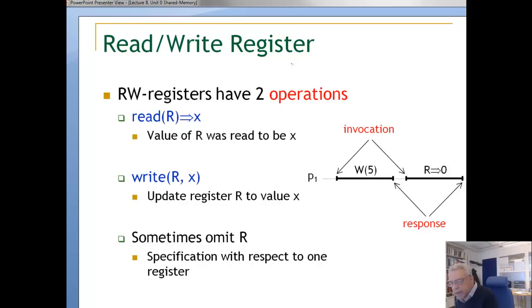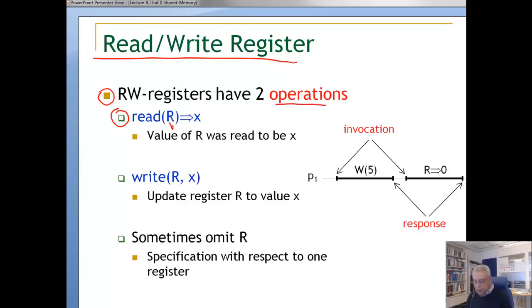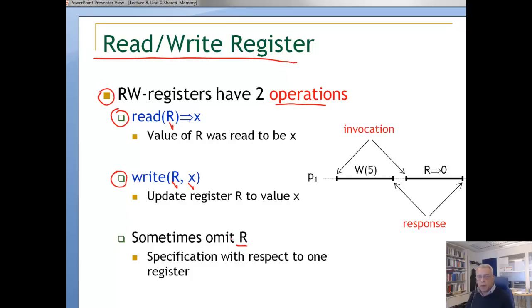So what exactly is a read-write register? A read-write register has two operations. A read operation on a register — if you read the register, you expect that you will get the value stored in it, so the value of R is read to be X. And the write operation — given a register, you are writing the value X into it, so after the operation completes, the value of this register is X. In this lecture we sometimes omit the register name; in general we assume we have an array of registers, but we will do our specification with respect to one register.